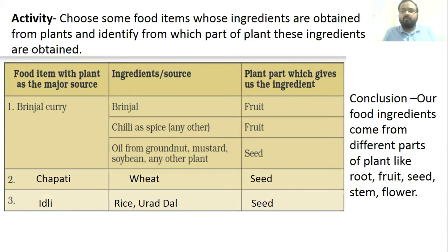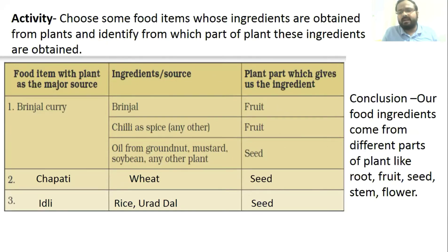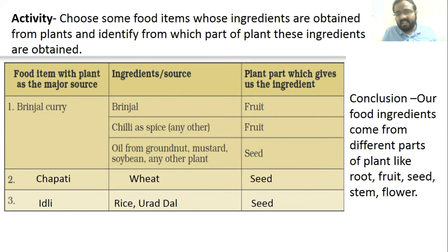The conclusion of this activity is that our food ingredients come from different parts of plants — root, fruit, seed, stem, and flower. Through this activity we have seen that different ingredients come from different parts of plants.